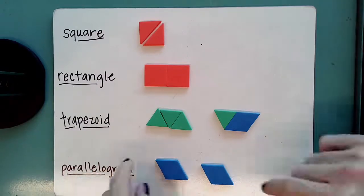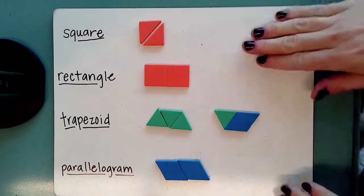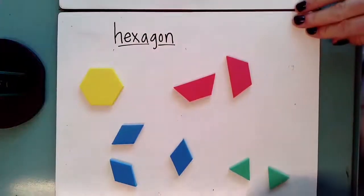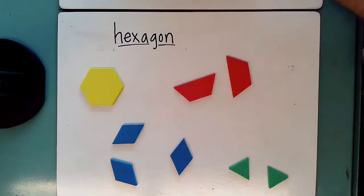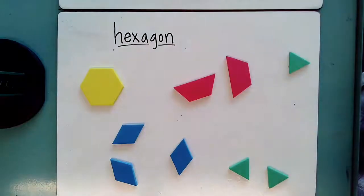We can create a parallelogram by putting two rhombuses together. Now let's take a look at our hexagon here and let's see if we can make hexagon using some shapes. Remember a hexagon has six sides.